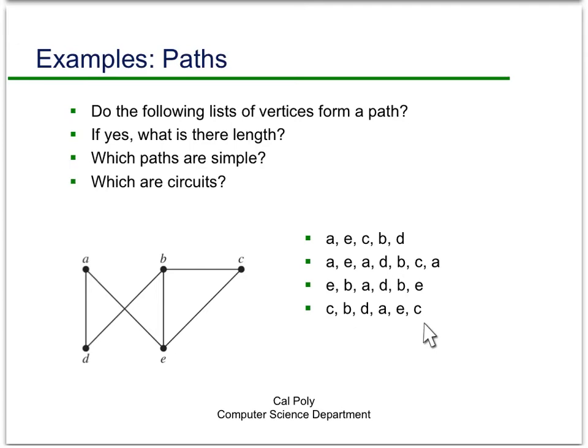Finally, the last sequence is a circuit. It begins and ends at C. Let me trace it for you: C to B to D to A to E to C. So that's a good example of a circuit.